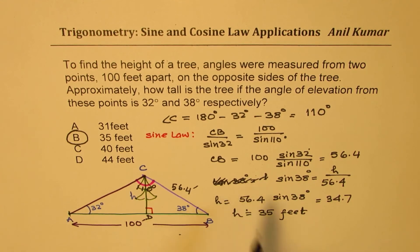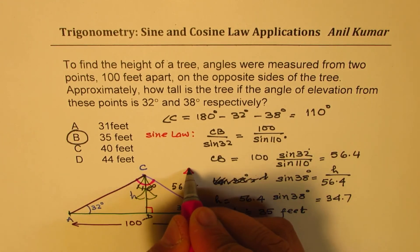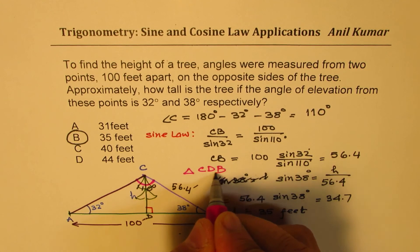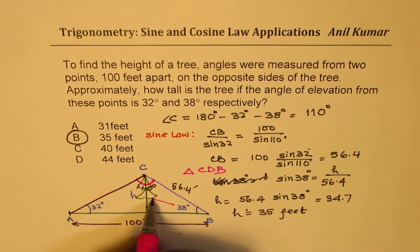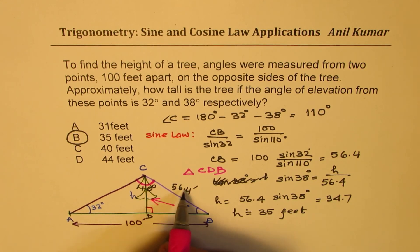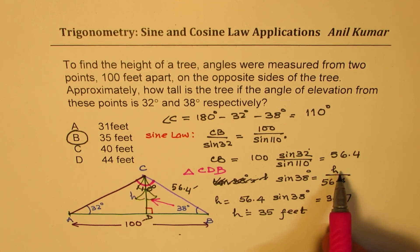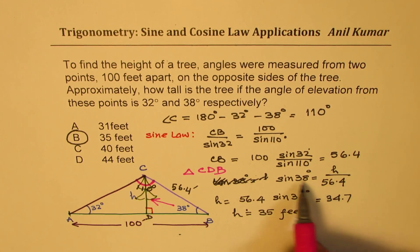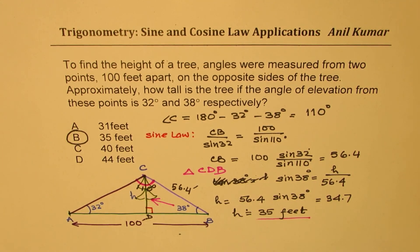Let me write down this triangle which we solved as triangle CDB. In this particular triangle, if you see from 38, then this height is the opposite side and that is the hypotenuse. So you could use sine ratio to find the height. So sine of 38 is opposite side h over the hypotenuse, so h is the product of these two, so we get 35 feet as our answer.